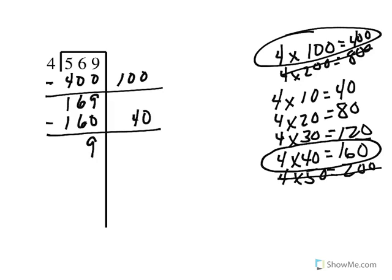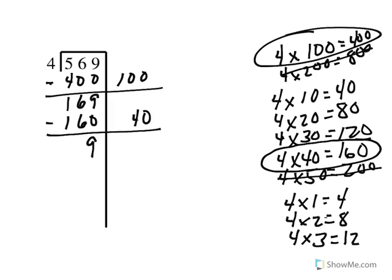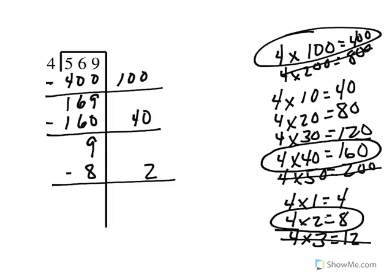I need to continue to take away groups of 4. Because I have 9, I can still subtract another group of 4. So I'm going to multiply my divisor 4 times 1 which is 4, 4 times 2 is 8, and 4 times 3 is 12. I cannot subtract 12 from 9, but I can subtract 8. So I'm going to subtract 2 groups of 4, which is 8. And 9 subtract 8 leaves me with 1 left over.